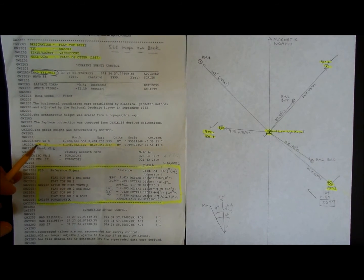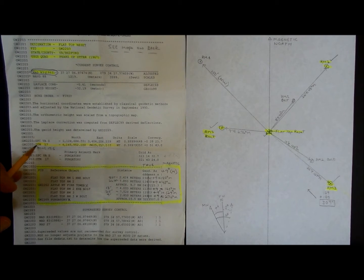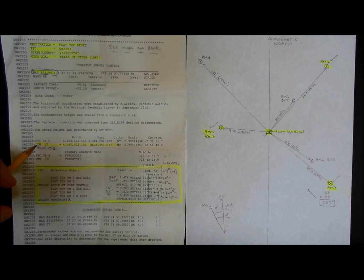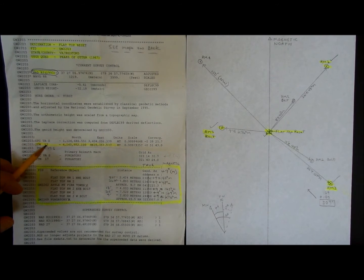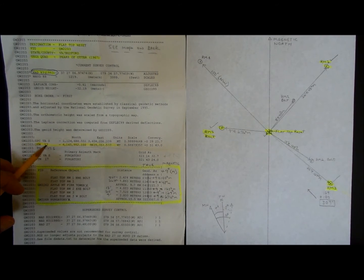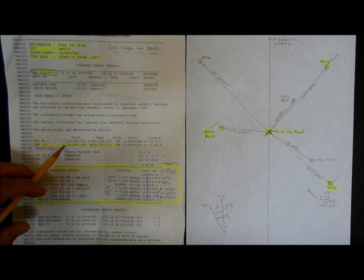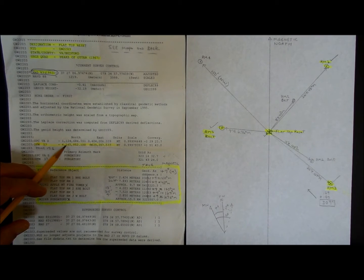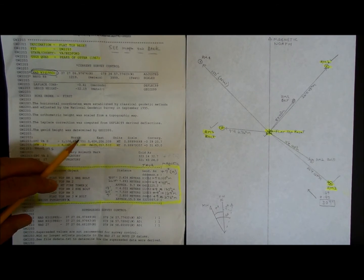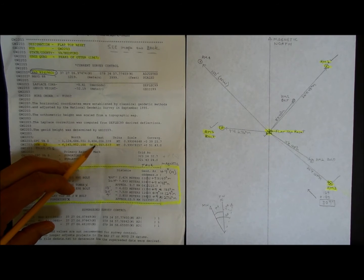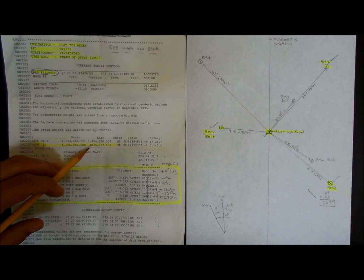Down here, you'll see these are the UTM coordinates of this benchmark, Flattop Reset. The 17 means that I'm in zone 17, UTM zone 17, and then this is the northing in meters, 4,145,952 meters, and the easting is 625,357 meters.